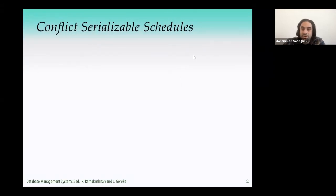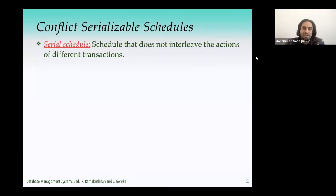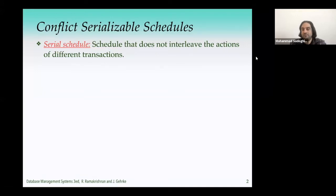Let's begin with our terminology. A serial schedule is one that is basically a serial execution of all transactions — one transaction being executed after another with zero interleaving of any actions. A strict single-threaded execution, one transaction at a time, becomes the gold standard for concurrency control, because trivially there is no concurrent execution and therefore no concurrent anomalies.